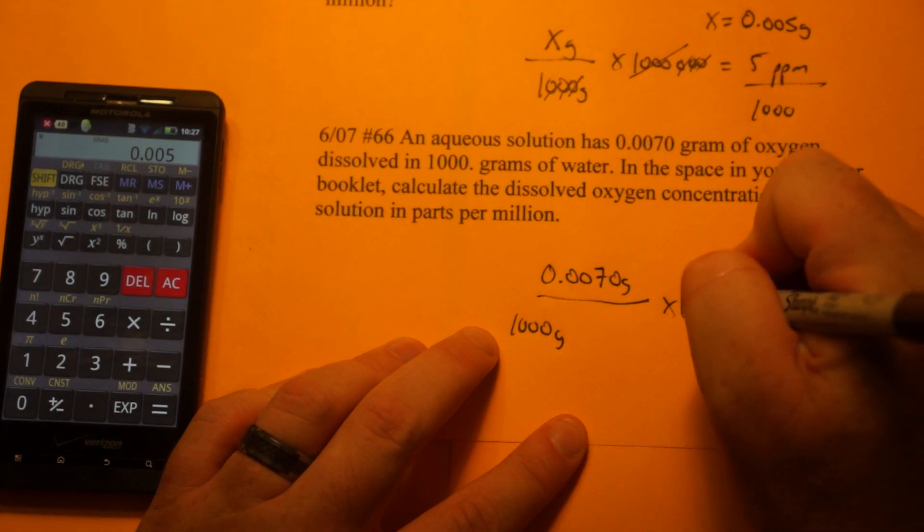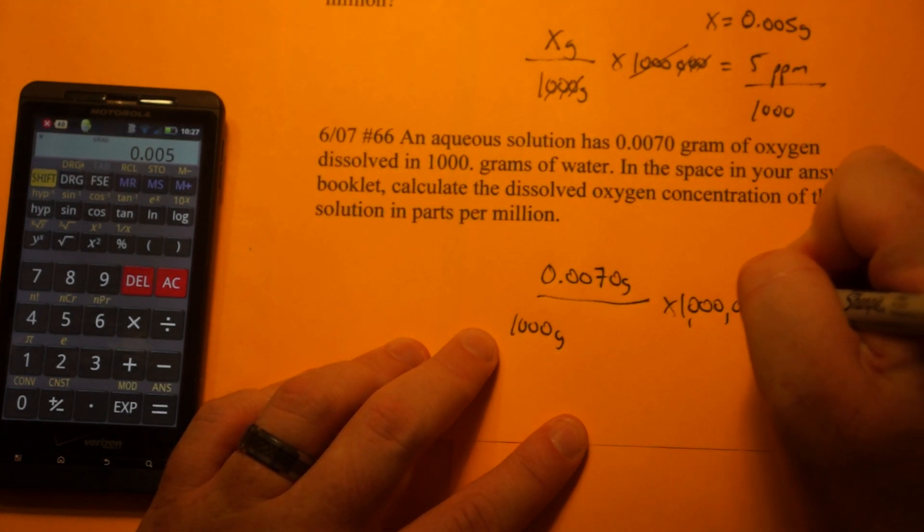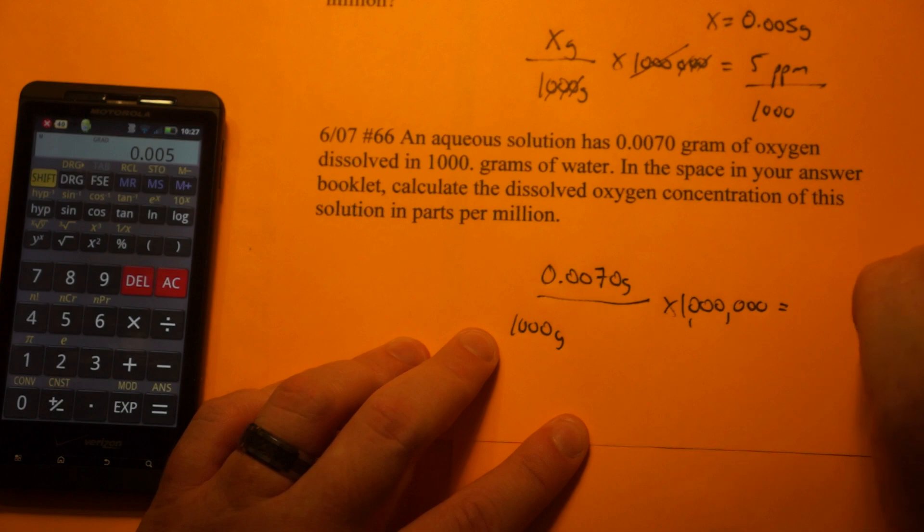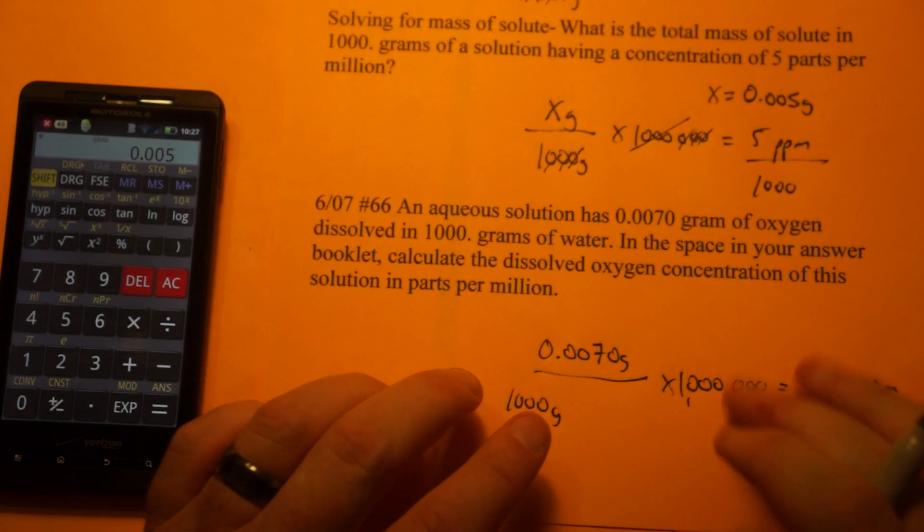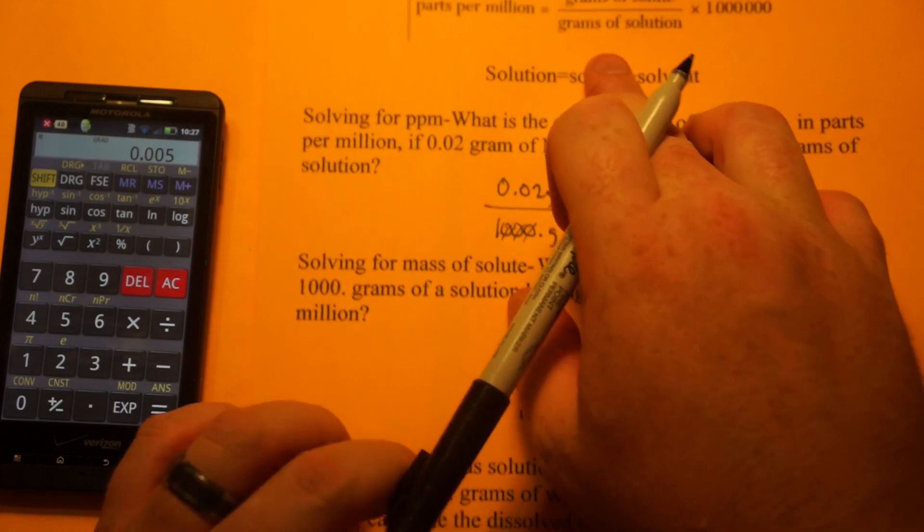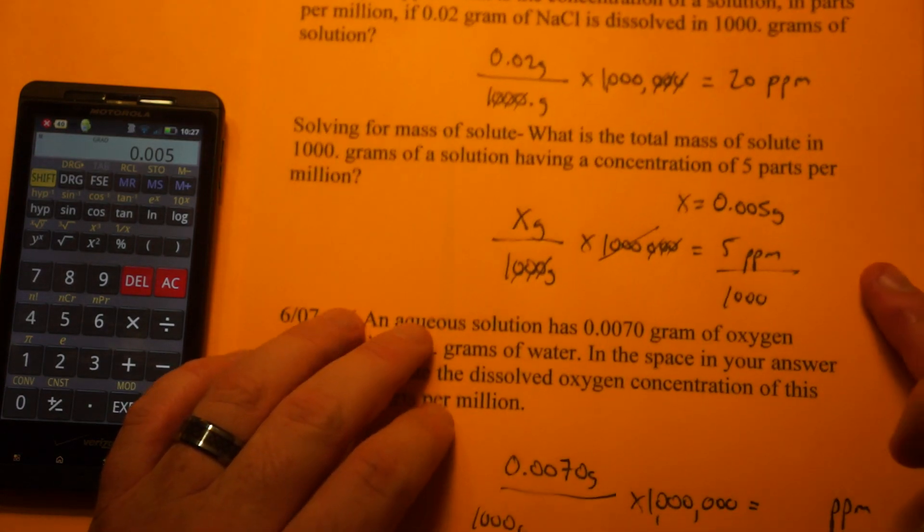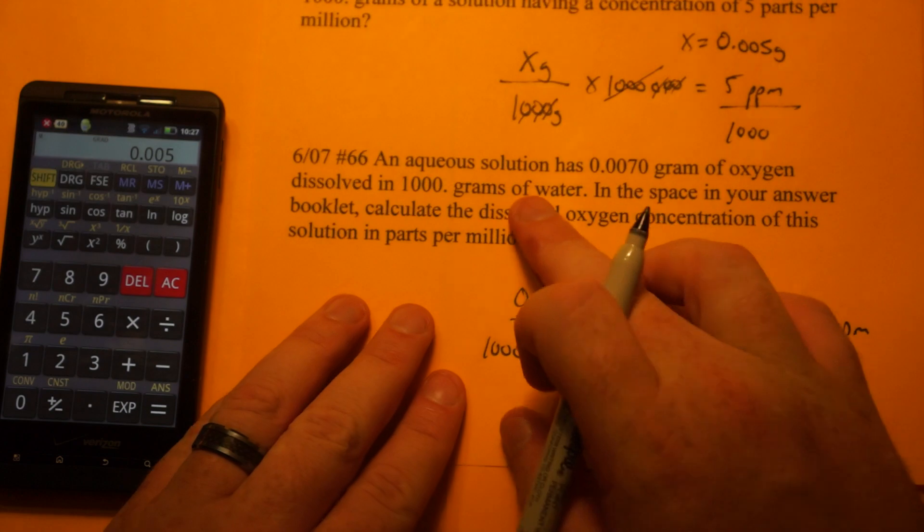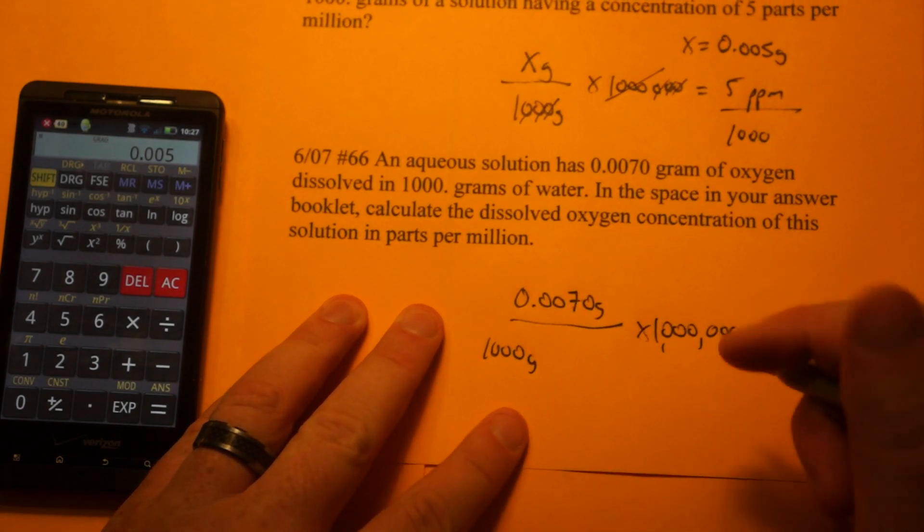So times a million is equal to your parts per million. However, I have to go back up to the equation. It said grams of solution. Water is not the solution. Water and oxygen is the solution.